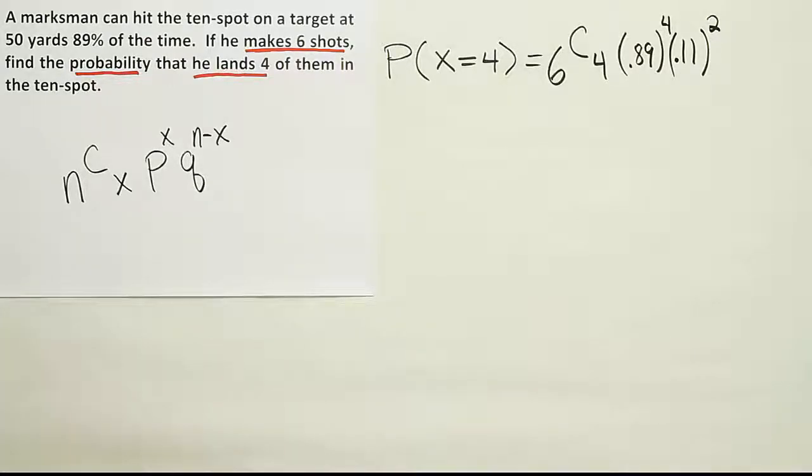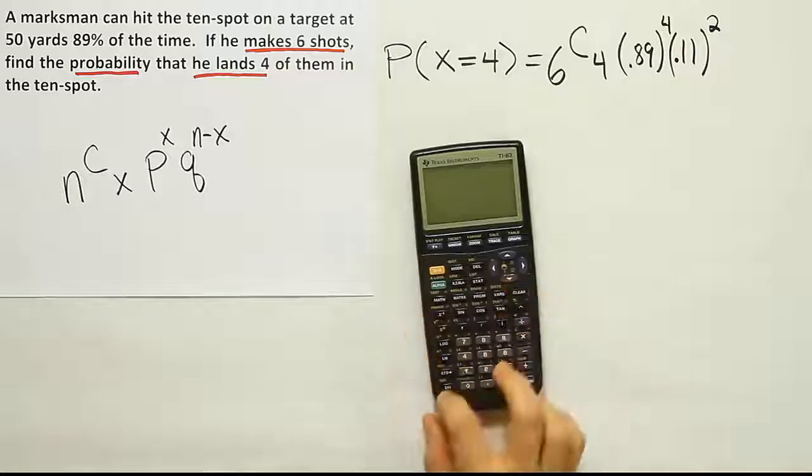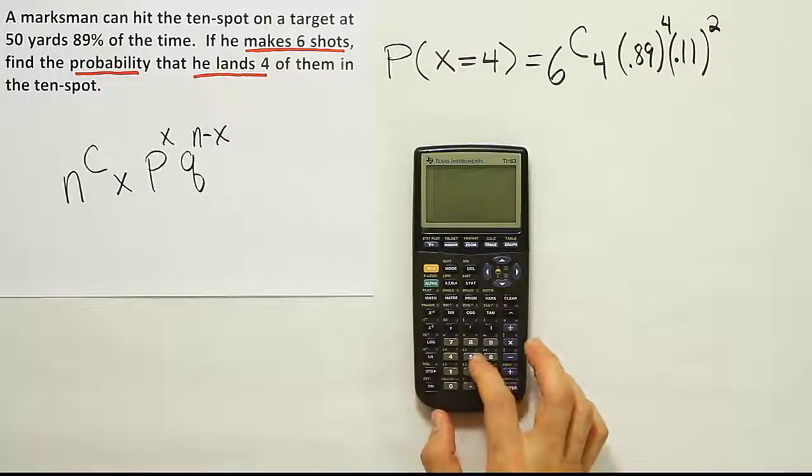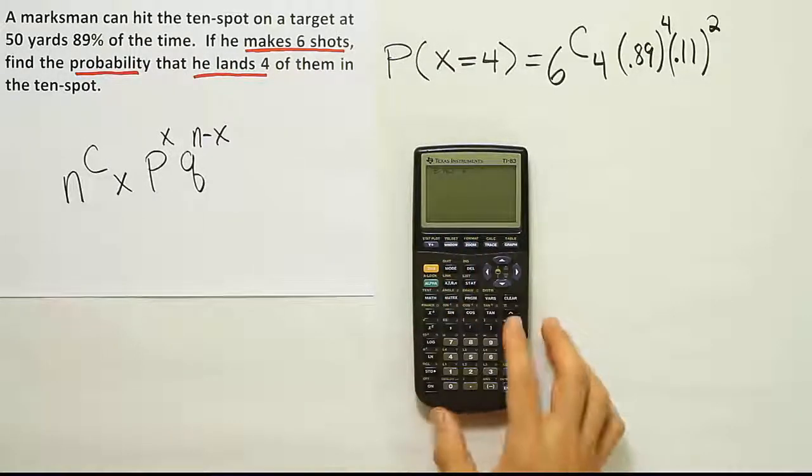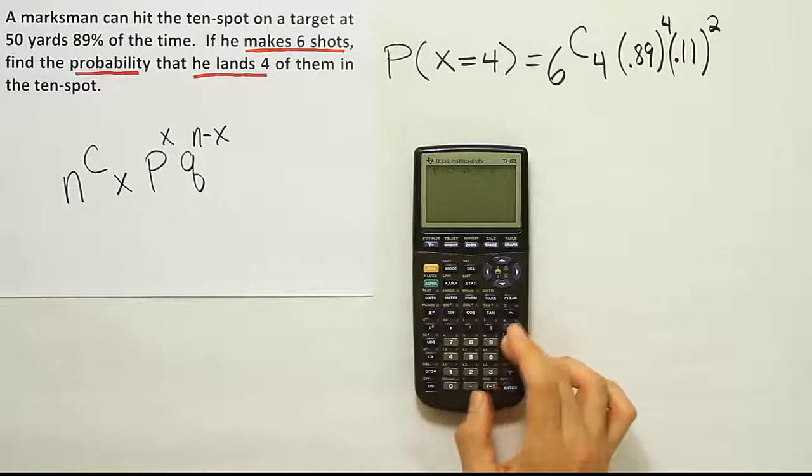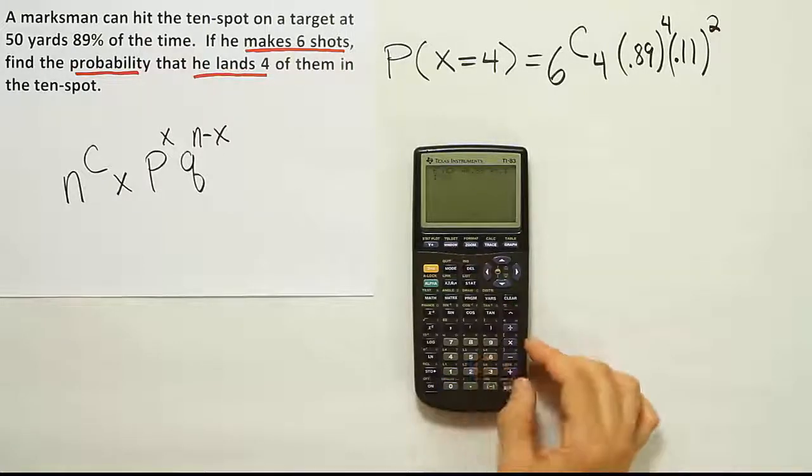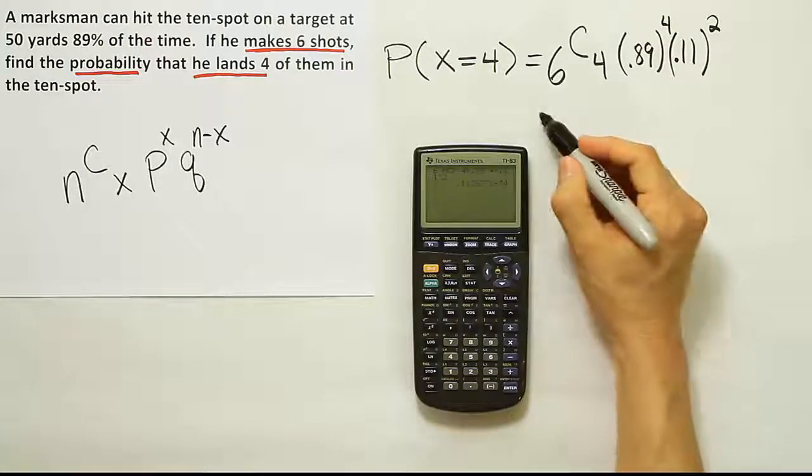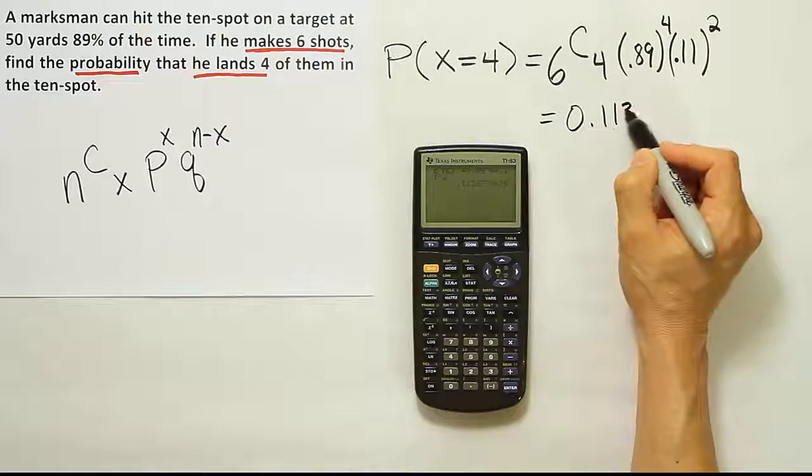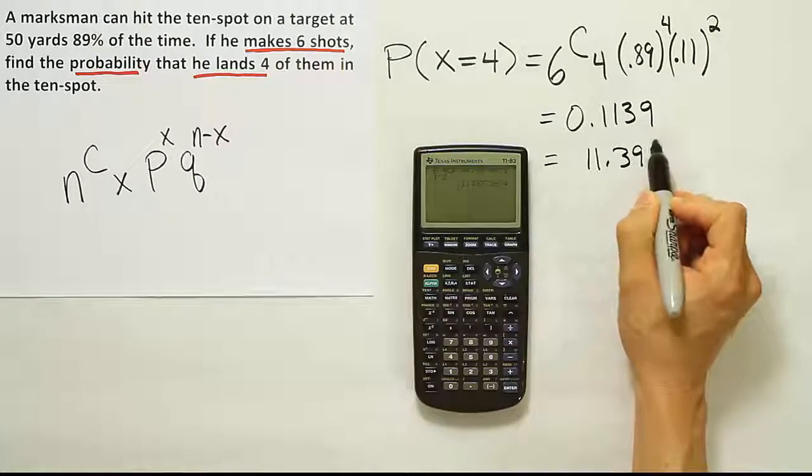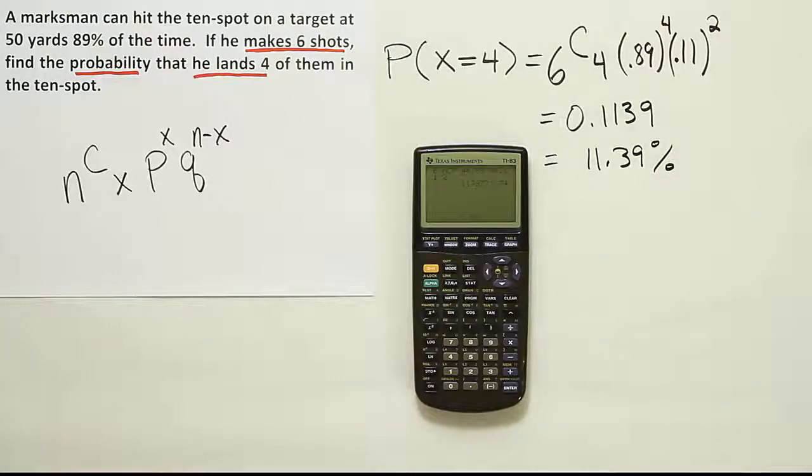All right. So that's the formula. The rest is really just calculator work. So let's go ahead and try that out. We'll have six math choose four. So again, I'm using my calculator to do that. I'll show you how to do that by hand afterwards if you're curious. Then times 0.89 to the fourth power times 0.11 to the second power. And when we do that, we get basically 0.1138. So our answer is then 0.1139, let's say. And that's basically the same as 11.39%. There's an 11.39% chance to hit four shots out of six.